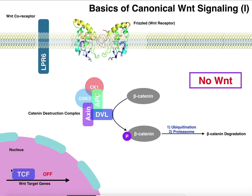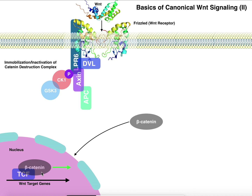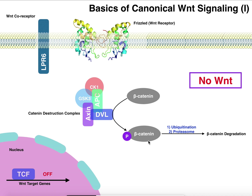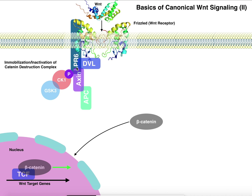Notice that in the case where there's no Wnt, the TCF transcription factor is already present — it just keeps the Wnt target genes off. When beta-catenin binds in conjunction with TCF, it turns the genes on. So really the key with Wnt signaling is whether or not beta-catenin is phosphorylated. If it's not phosphorylated, Wnt target genes are on; if it is phosphorylated, it's degraded by the proteasome and the genes are off. Whether or not it's phosphorylated depends on whether or not you have a functioning beta-catenin destruction complex. In summary, when Wnt binds to the receptor, it recruits all these proteins to Frizzled and LRP6, inactivating the destruction complex, leaving beta-catenin free to enter the nucleus and turn on its target genes.